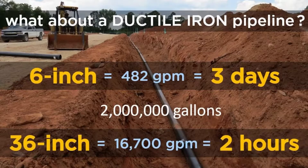When it comes to ductile iron pipe, you really can't hurt it with too much flow — those are worries for other piping materials. In this example, our 2 million gallons can easily be delivered in less than 3 days through a 6 inch ductile iron pipe, or just 2 hours through a 36 inch ductile iron pipe, without ever exceeding an efficient design velocity of 5 feet per second. That's a lot of flow!